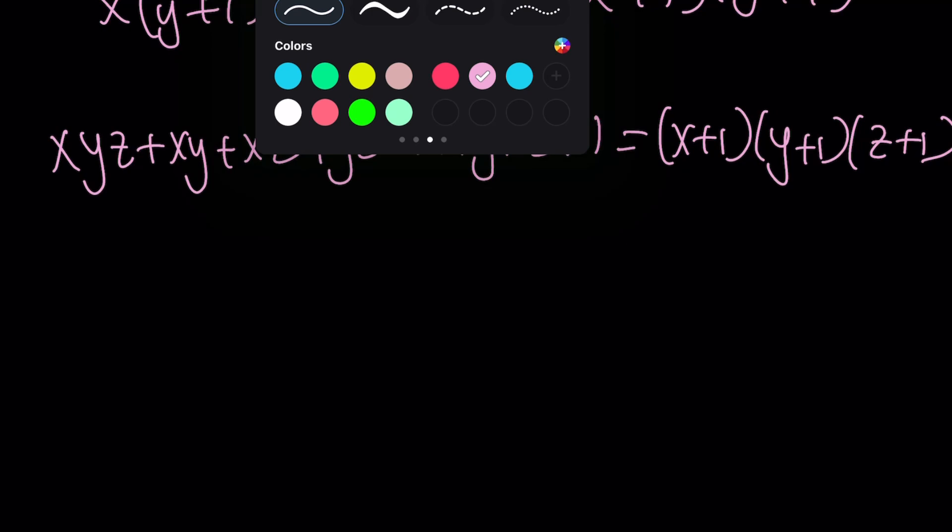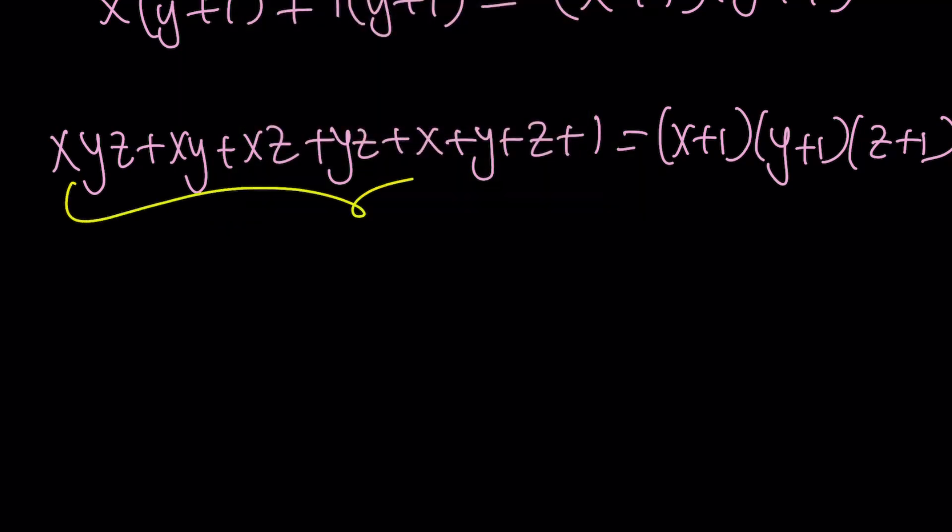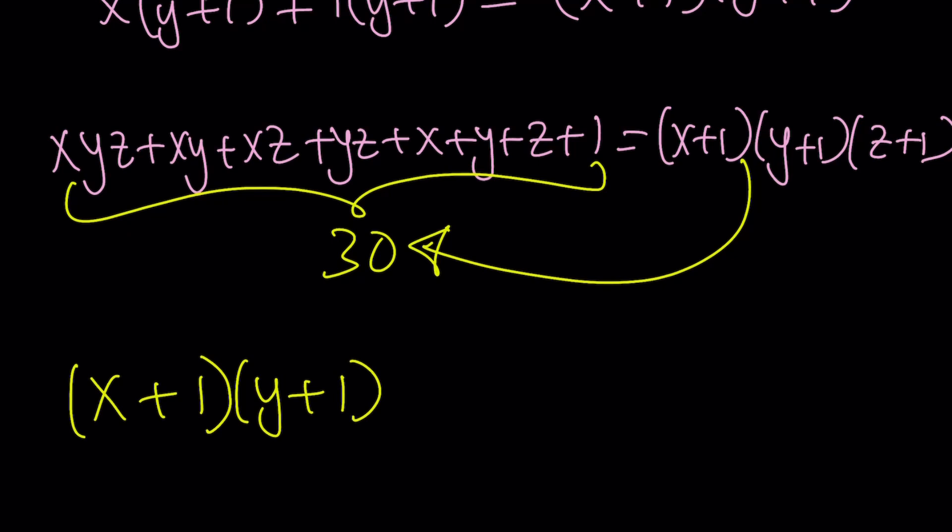Make sense? Now, since this is equal to 30, we know that, right? Because we added one, it was 29. Now, this is equal to 30. So, we get ourselves a really nice equation. So, basically, one of the methods that we use for solving Diophantine equations in systems is factoring.